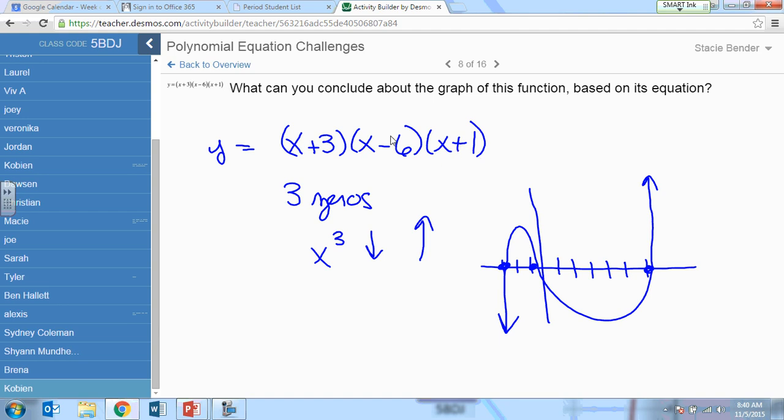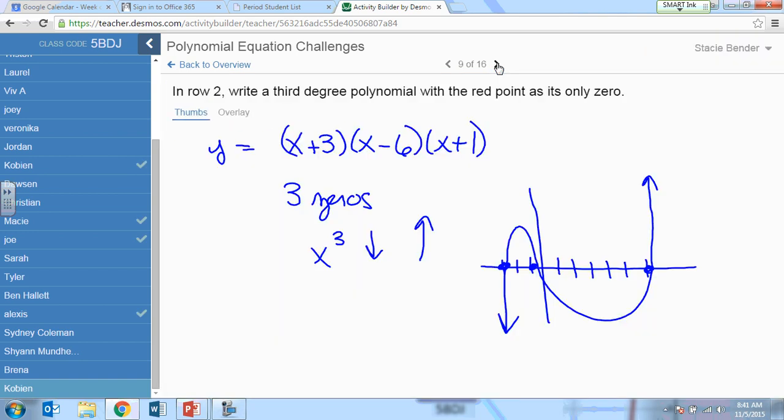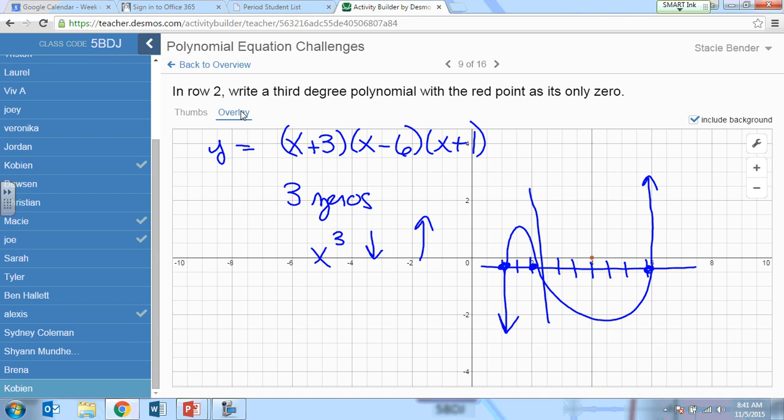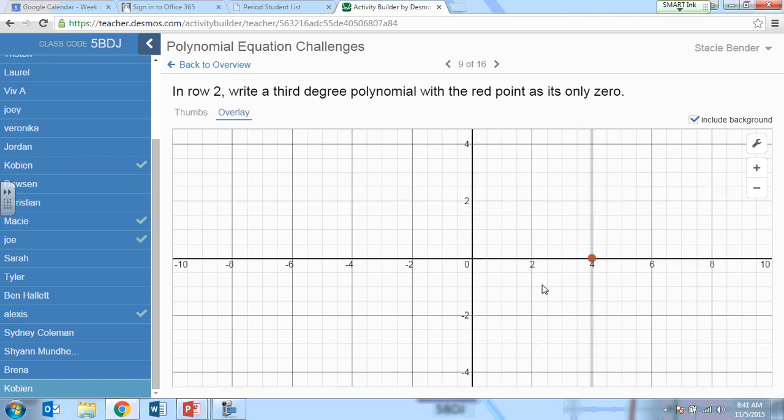We want a red point as it's only zero. There's my red dot. Right there. We want a third degree polynomial. Third degree polynomial. What's another name for it? Cubic. We want a cubic with a red dot as it's only zero. What's the red dot? Four. Okay? So if four is a zero, what would its factor be?